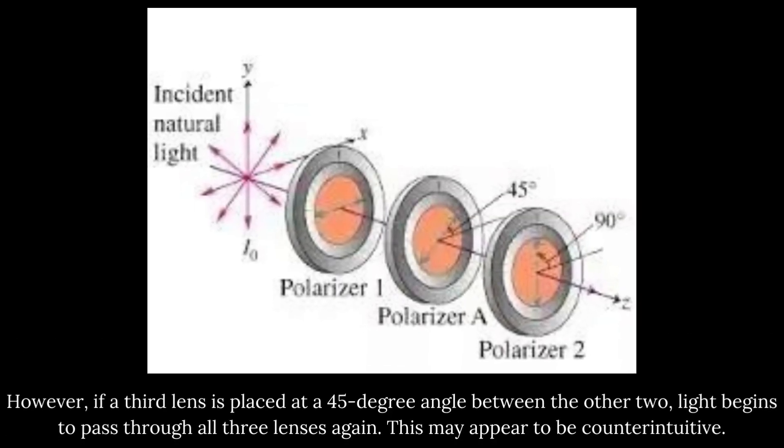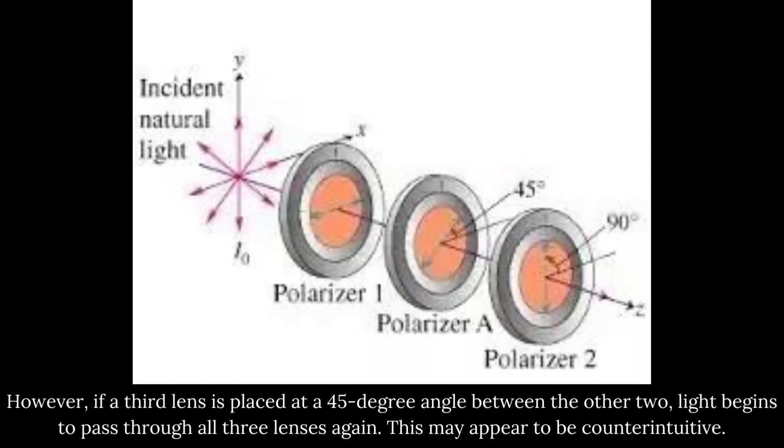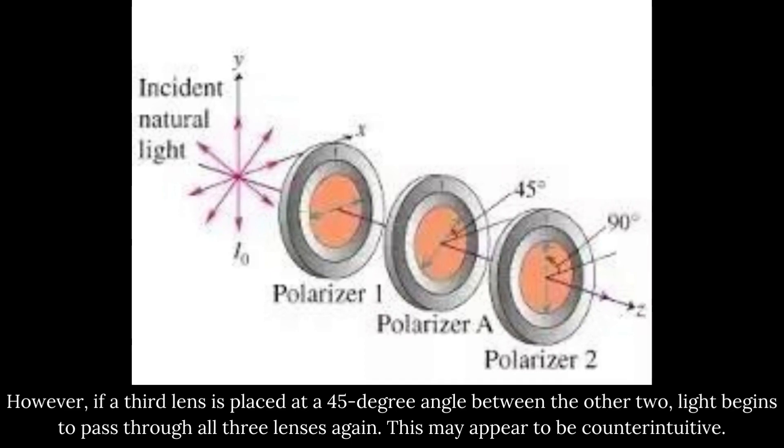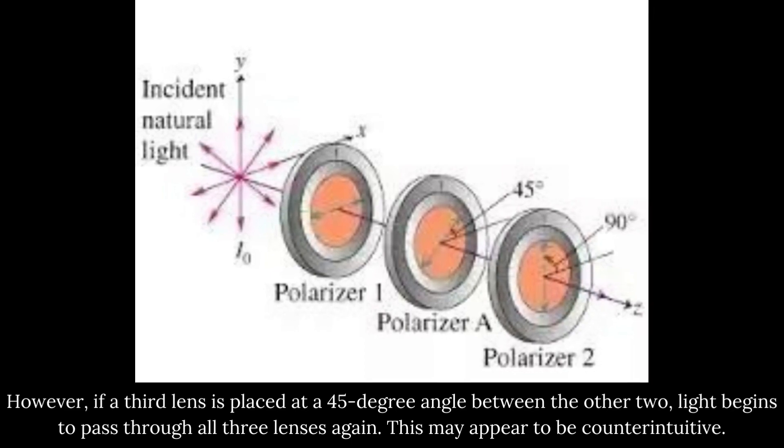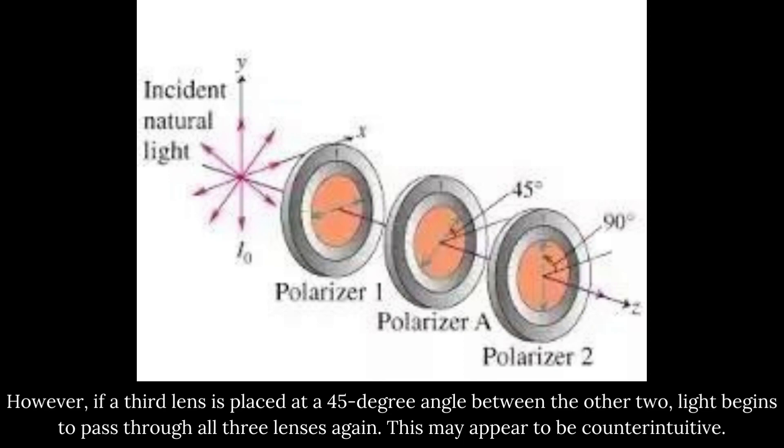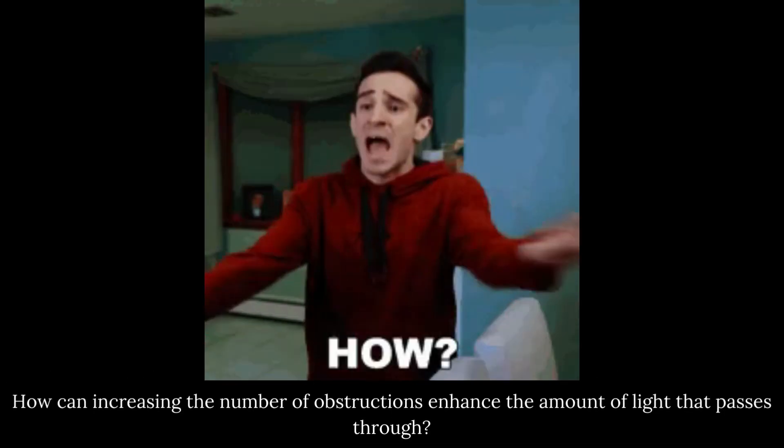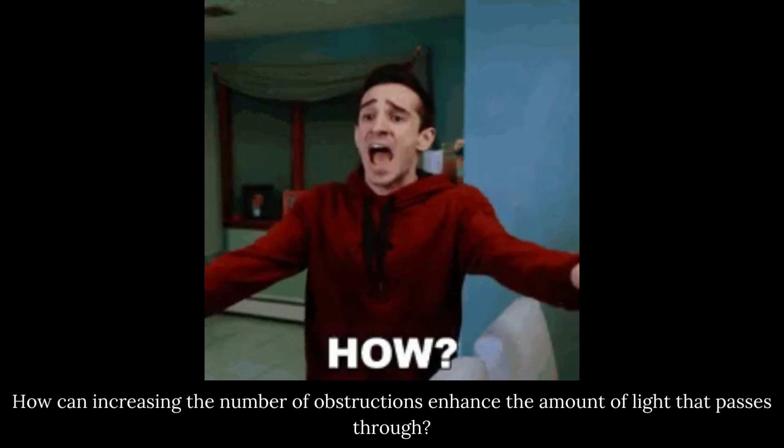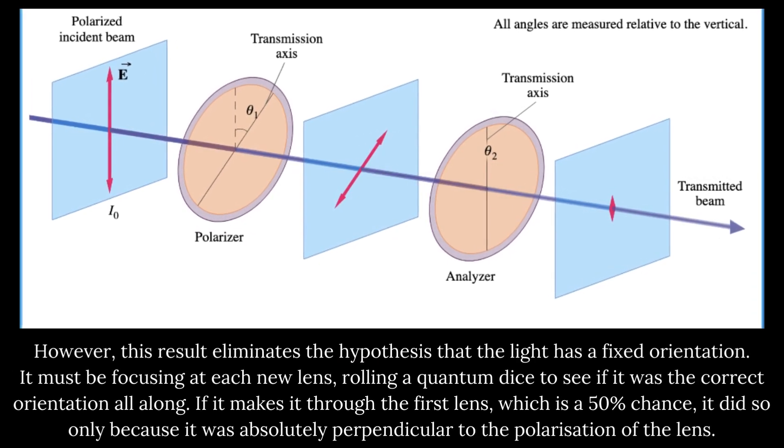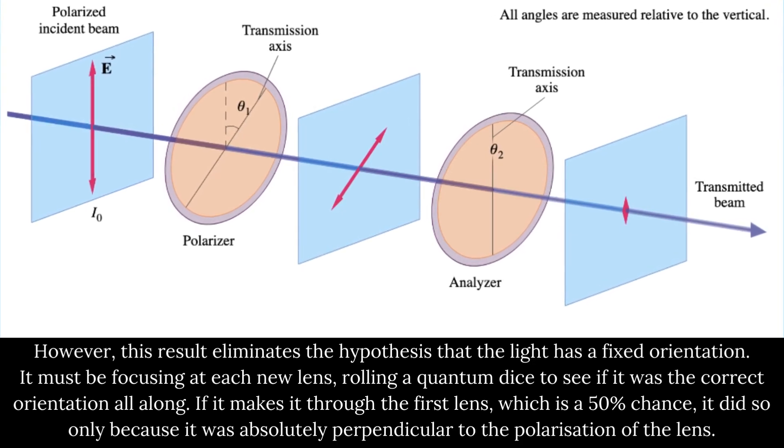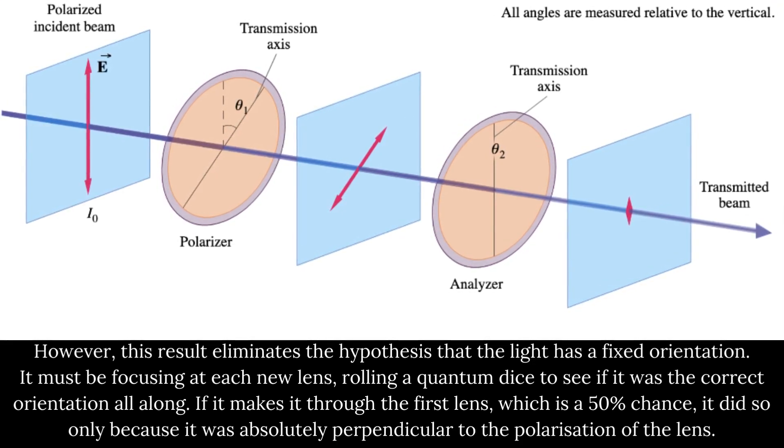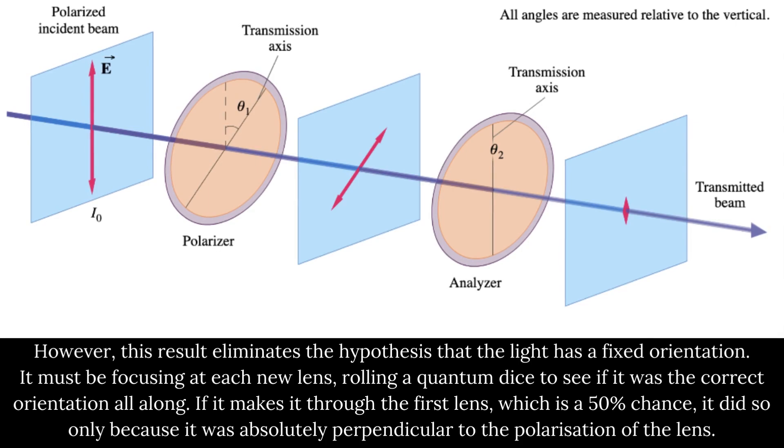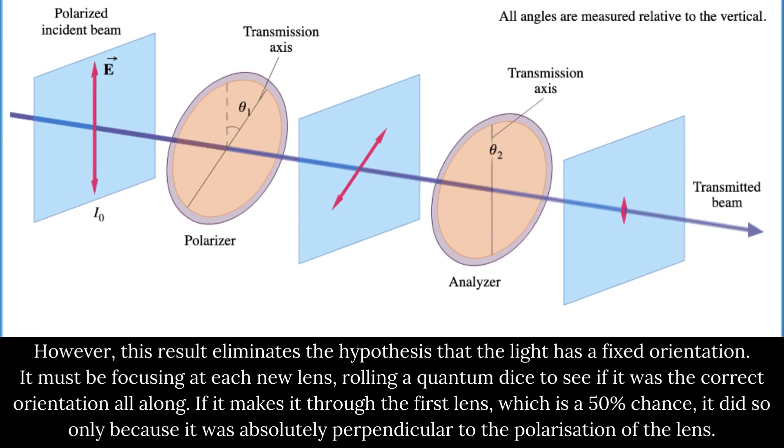However, if a third lens is placed at a 45-degree angle between the other two, light begins to pass through all three lenses again. This may appear to be counterintuitive. How can increasing the number of obstructions enhance the amount of light that passes through? However, this result eliminates the hypothesis that the light has a fixed orientation. It must be focusing at each new lens, rolling a quantum dice to see if it was the correct orientation all along.